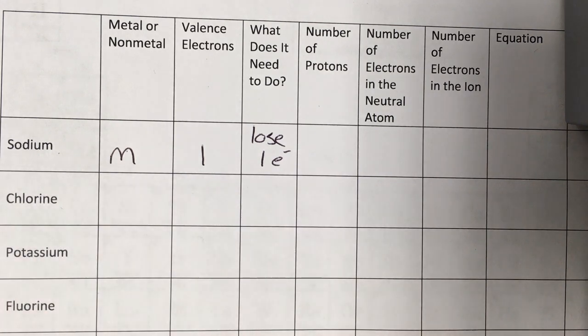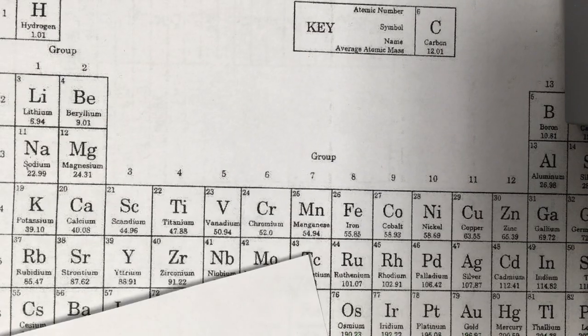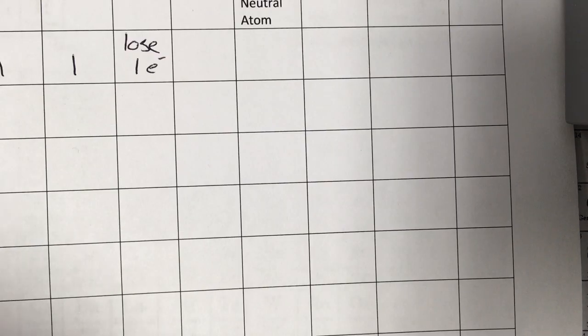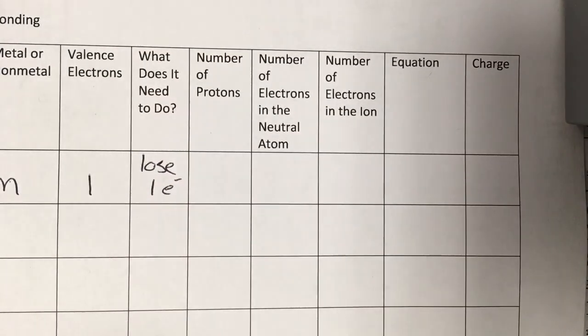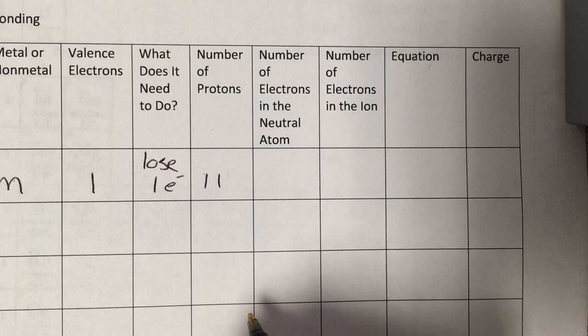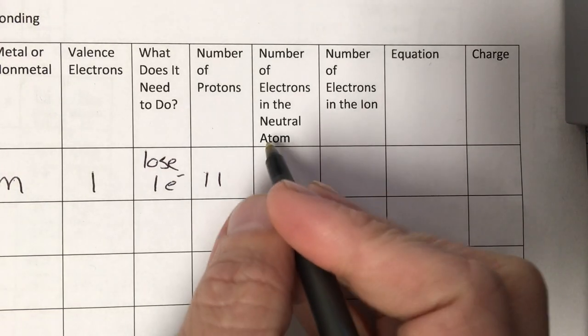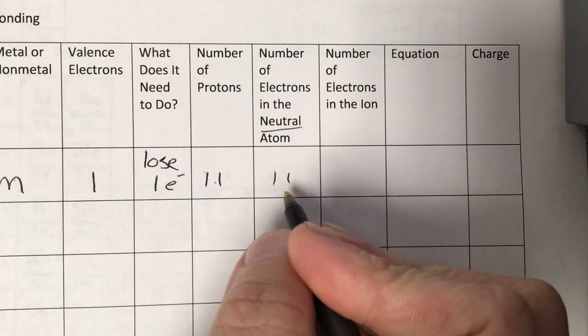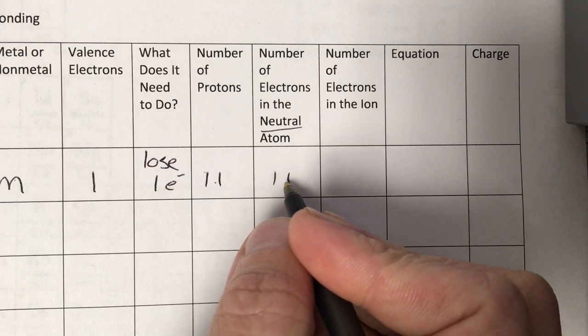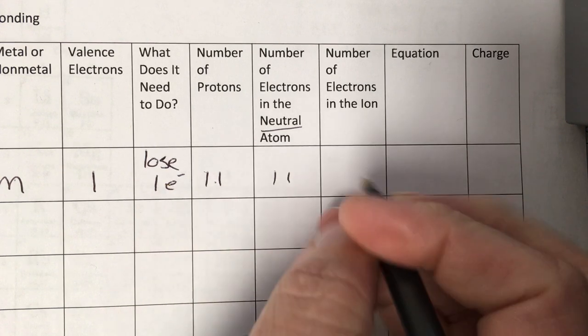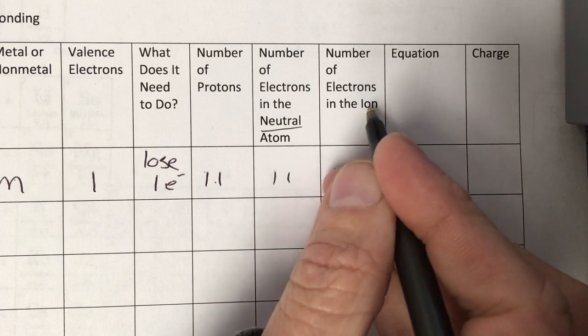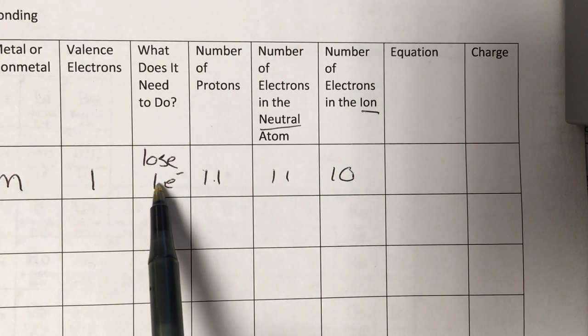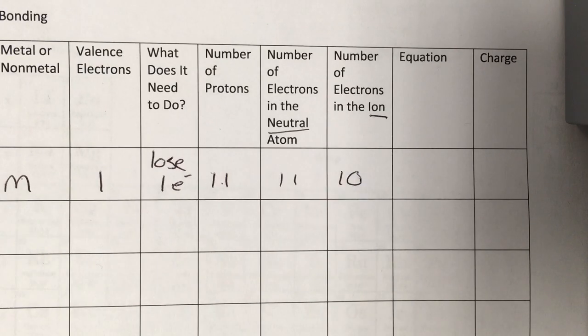When it does this, the number of protons does not change. The number of protons is still equal to the atomic number, which should be 11. The old neutral atom, the protons and electrons are the same, had 11 of them. But now that we're going to lose one, the ion will have only 10.